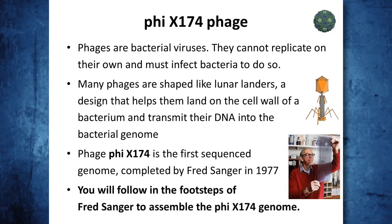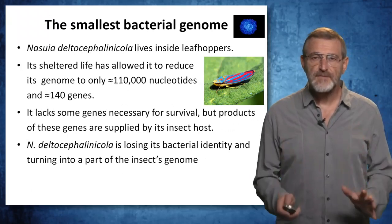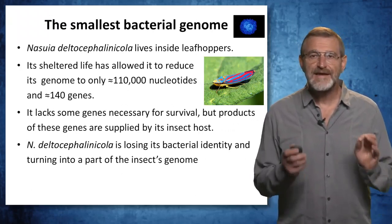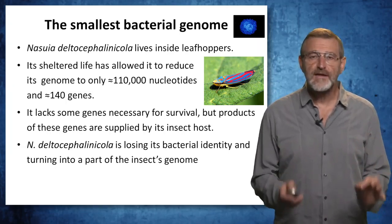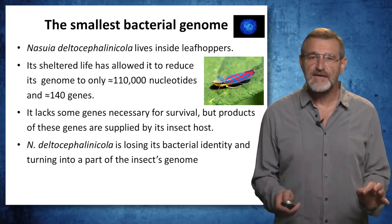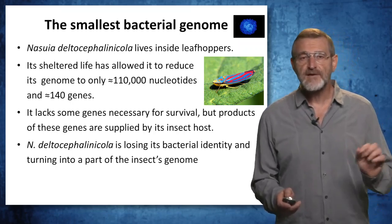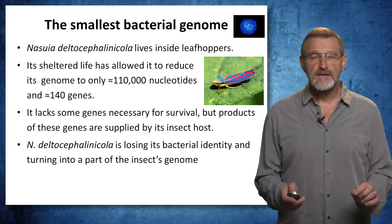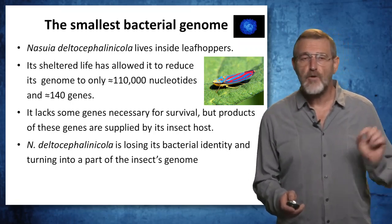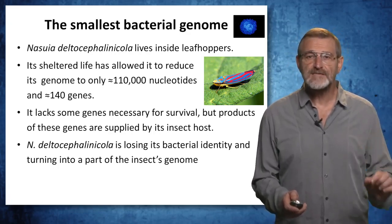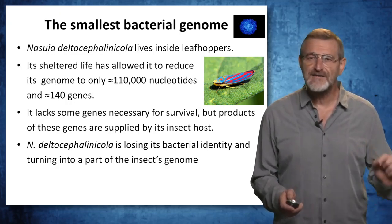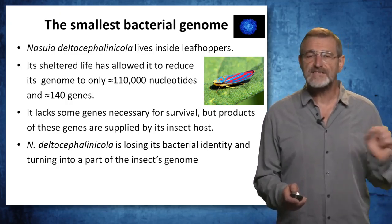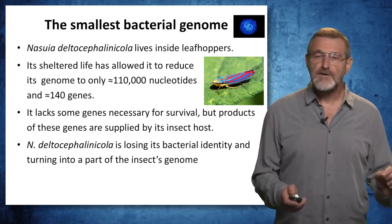You will follow in the footsteps of Fred Sanger to assemble the φX174 genome. Our next task will be to assemble the smallest bacterial genome. This bacteria lives inside leafhoppers, and its sheltered life allowed it to reduce its genome to only about 110,000 nucleotides — 50 times smaller than E. coli X's genome — and only approximately 140 genes. It lacks some genes necessary for survival, but products of these genes are supplied by its bacterial hosts. Biologists believe this bacterial genome is losing its bacterial identity and turning into a part of the insect genome, just like mitochondria in human cells.